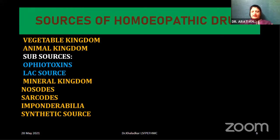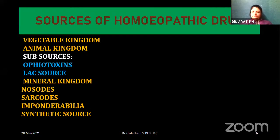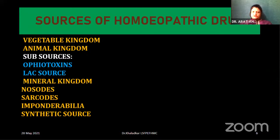Number one: vegetable kingdom. More than 70% of the whole of the sources is from the vegetable kingdom or the plant kingdom. Followed by animal kingdom, with ophiotoxins and lactos as sub-sources of the animal kingdom. Then we have the mineral kingdom, then nosodes, sarcodes, imponderabilia, and synthetic source.